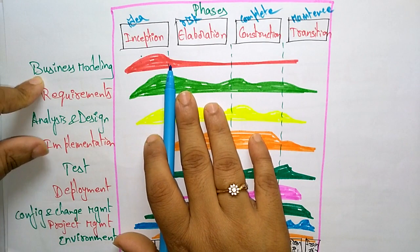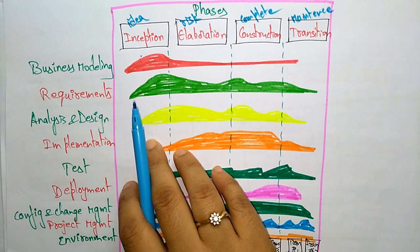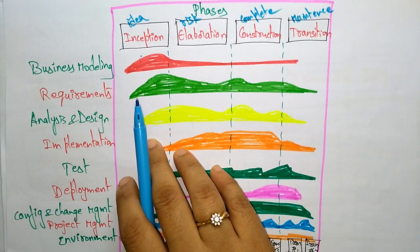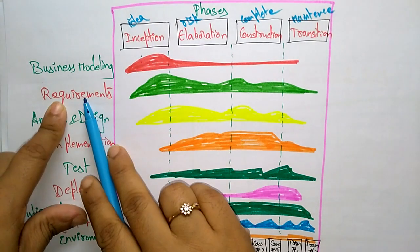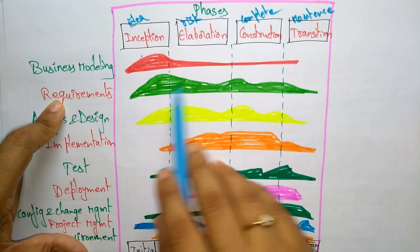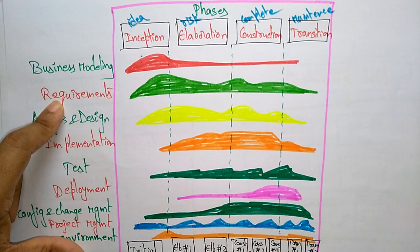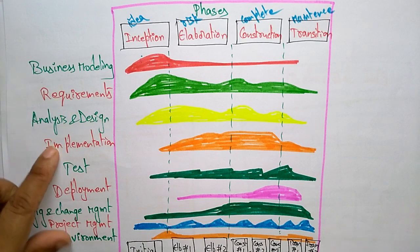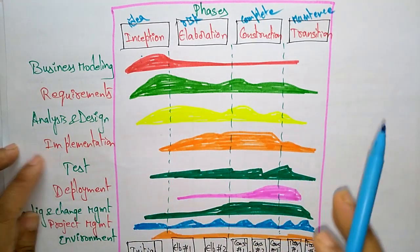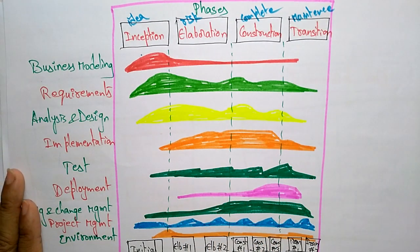Looking at business modeling, it starts high in Inception where you are just gathering ideas and discussing with the customer. Requirements flow through all four phases — Inception, Elaboration, Construction, and Transition — because everything is based on requirements. Analysis and design are involved mostly in the first three phases and in some cases into Transition.